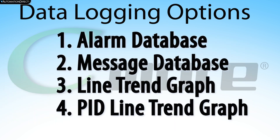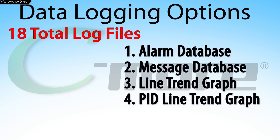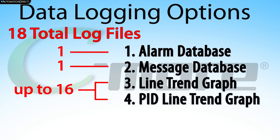These are the 4 data logging options. These options create a CSV log file that are a day long and end at midnight each day. There can be a total of 18 log files: one for your alarm log, one for your message database, and up to 16 log files for either the line trend graph or the PID faceplate line trend graph.